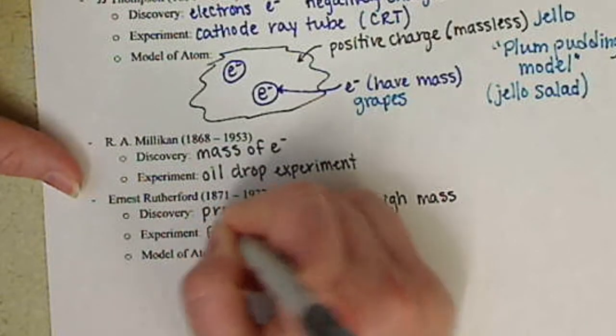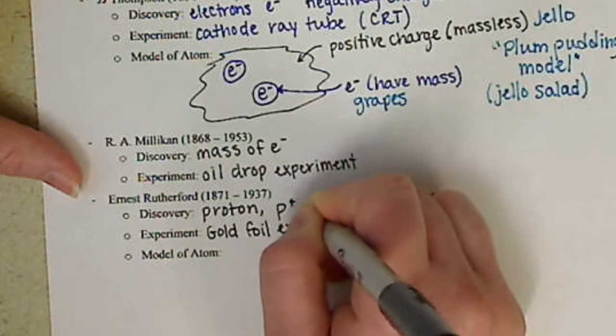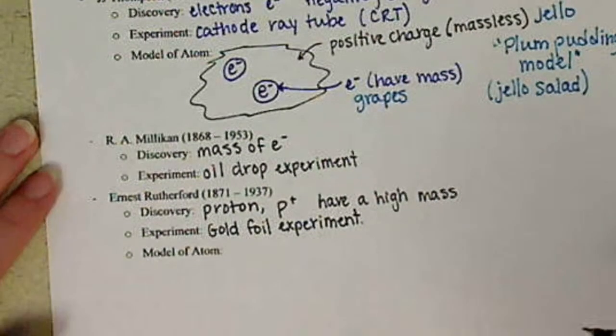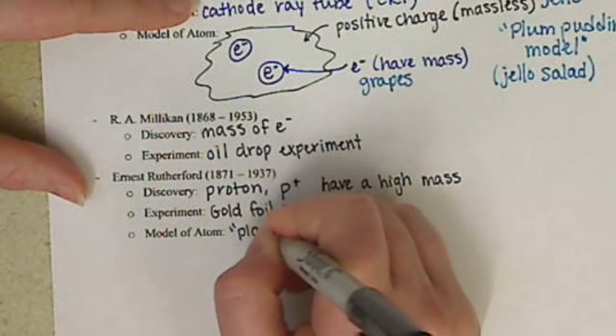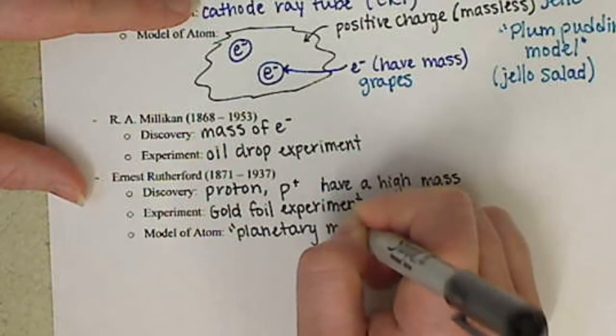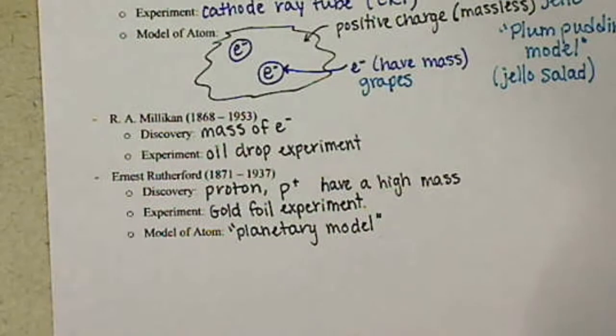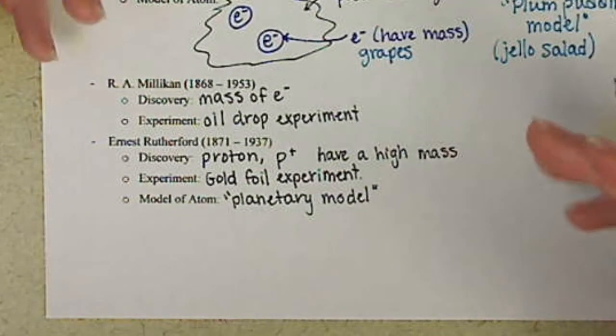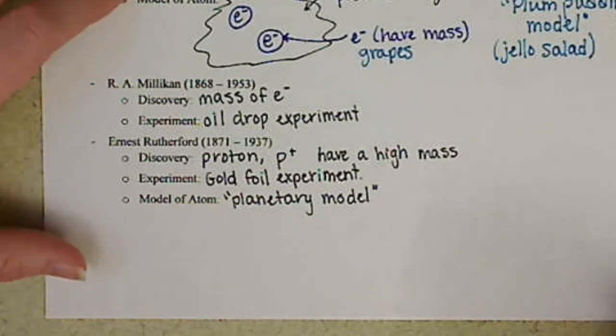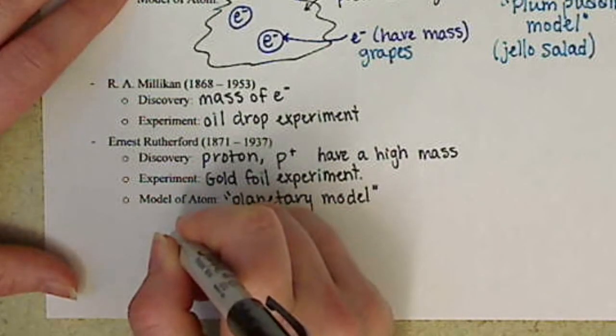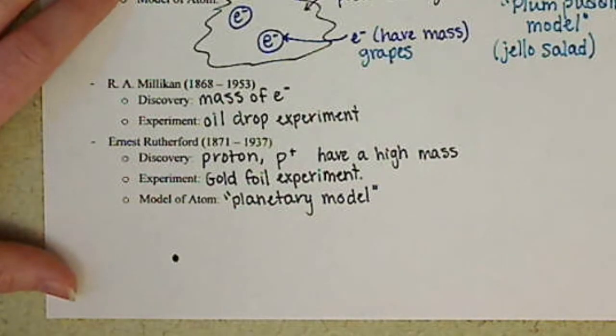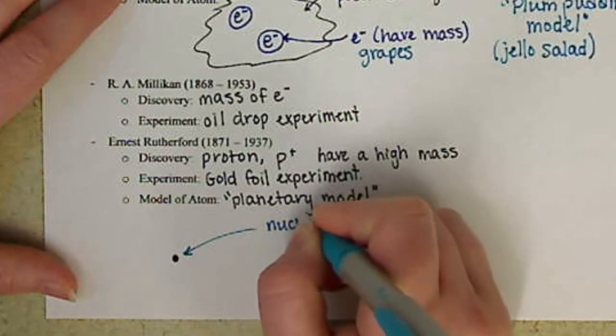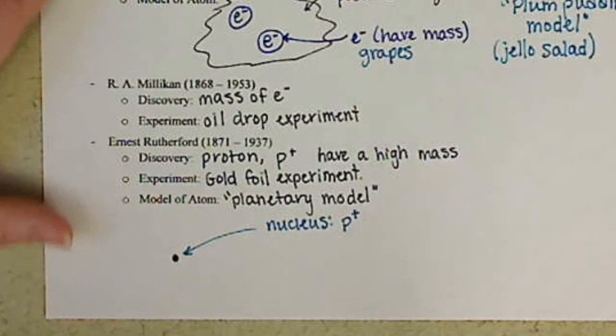His experiment, it's called the Gold Foil Experiment. And his model of the atom is nicknamed the planetary model. And for now, this is the model that works for us. It's a fairly simplistic model of the atom. But it kind of gets all the points across and all the components of it, of our atom. So our planetary model. So what he kind of suggests is in the center, this is our nucleus.